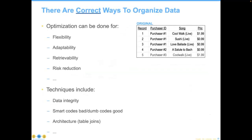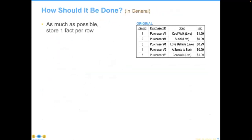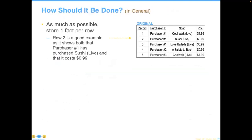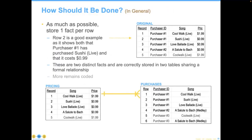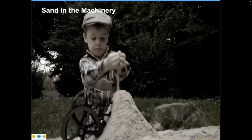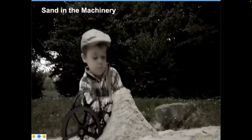There are correct ways to have data organized, and it can be done on the basis of flexibility, adaptability, and retrievability. The bottom line: try to have as little as possible — one fact stored with one row of data. The better solution is to maintain a master set of tracks, records, or songs, so that when you change the price of a song, that price is repopulated out to the entire database, with a one-to-many relationship between songs in the pricing database and each purchase. The problem is your IT workers don't know this, your knowledge workers don't know this, and it becomes sand getting in the gears.